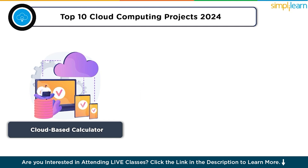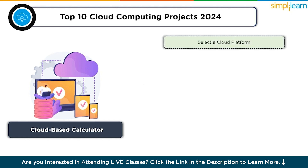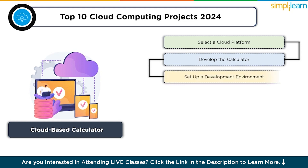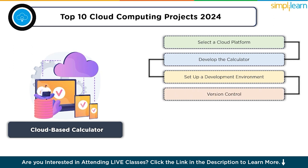To create this project, start by selecting a cloud platform like Heroku, AWS or Azure for deployment. Then develop a simple web-based calculator using HTML, CSS and JavaScript. Set up your development environment by installing necessary tools and libraries on your local machine. Use version control systems like Git to manage your project.